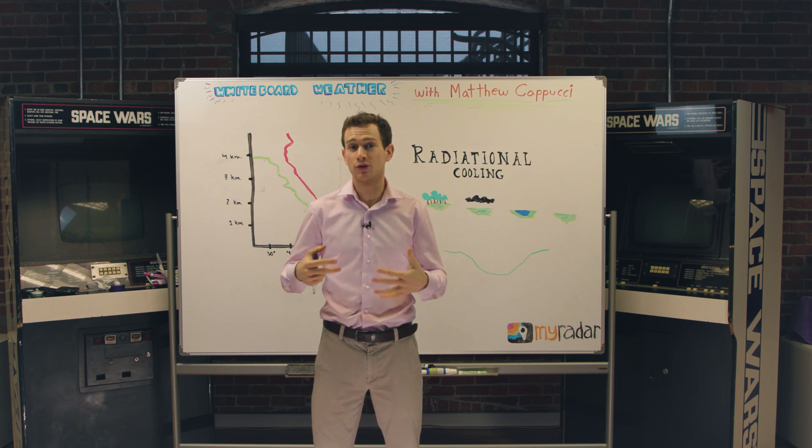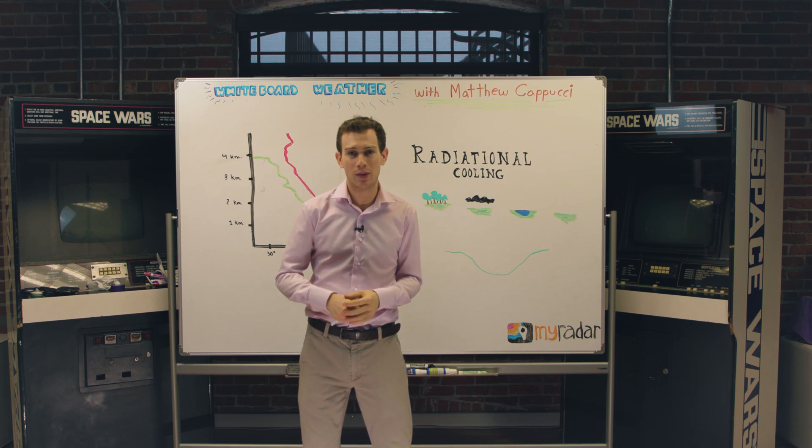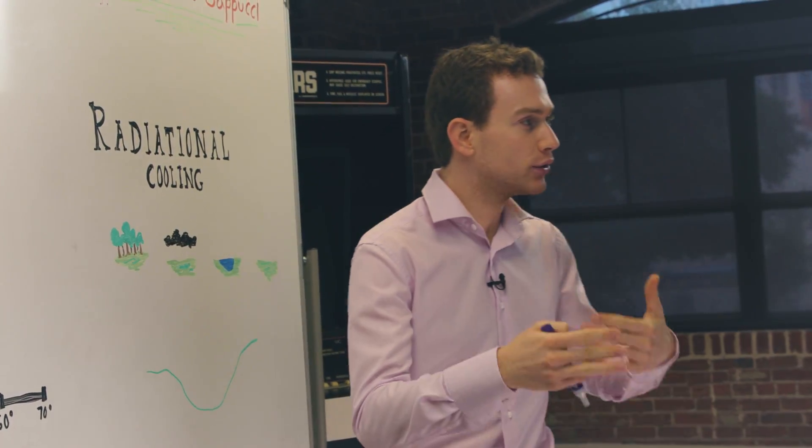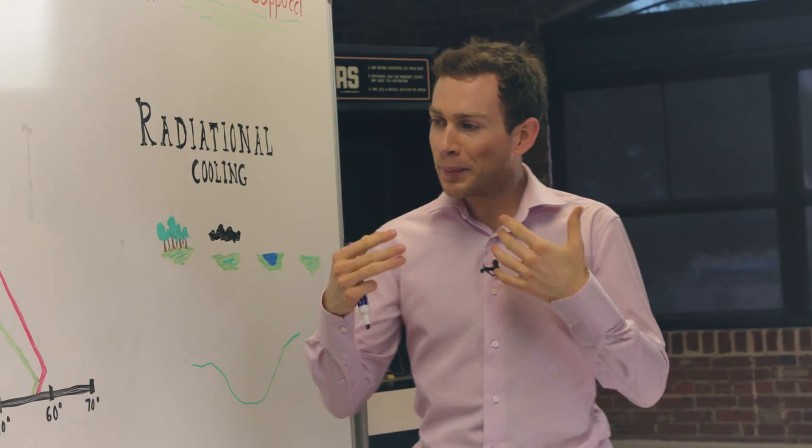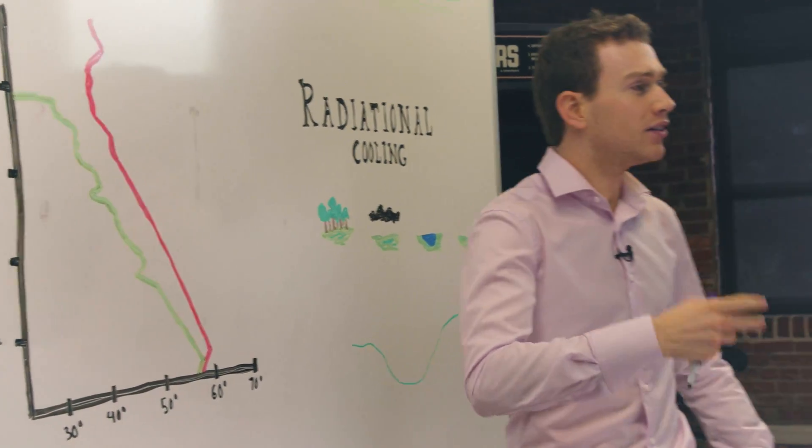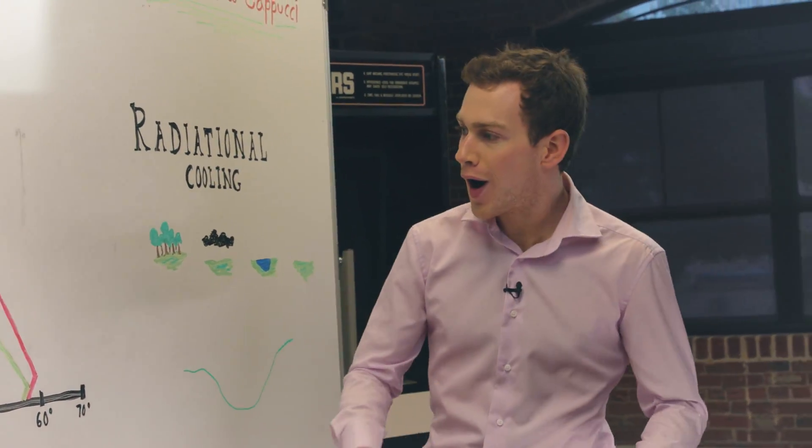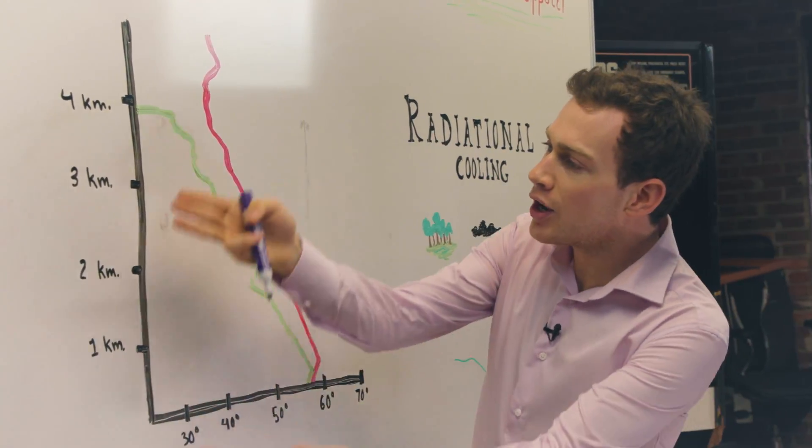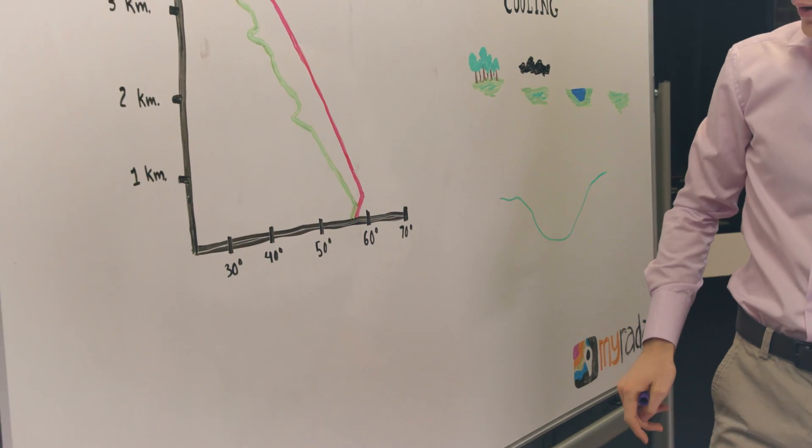We can look at something called a sounding, basically a schematic diagram of the temperature and dew point with height in the atmosphere, or a profile. This one I drew is just an example of what setup would favor fog. Temperature is in red, dew point is in green. We have height going up like this, and temperature of course is down here.